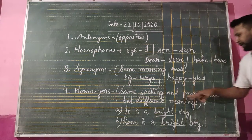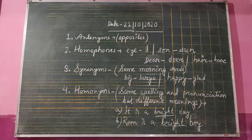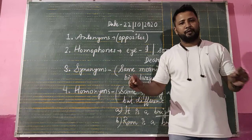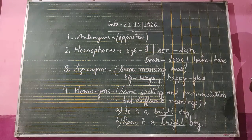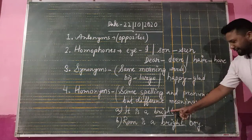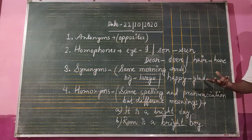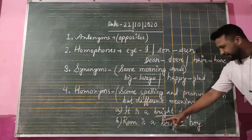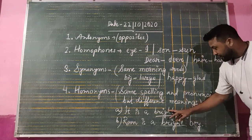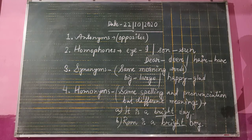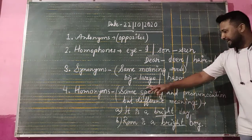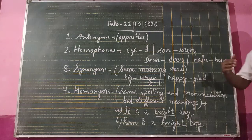Homonyms have the same spelling and the same pronunciation, but a different meaning. For example: 'It is a bright day' — here 'bright' means sunny. And 'Rami is a bright boy' — here 'bright' means intelligent or clever. Same spelling, same pronunciation, but different meaning.